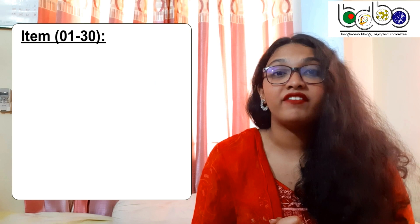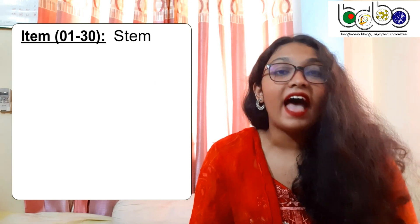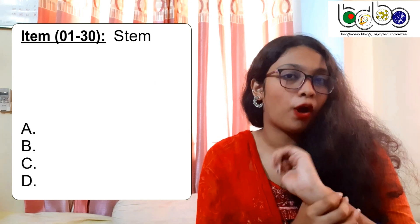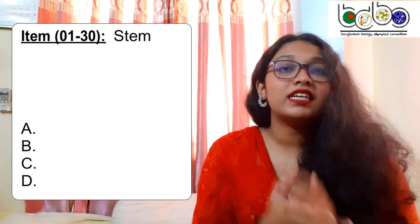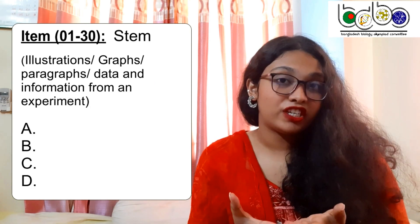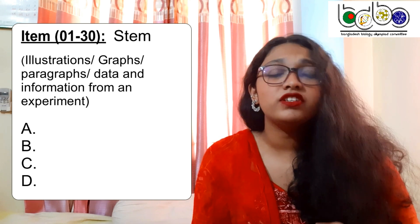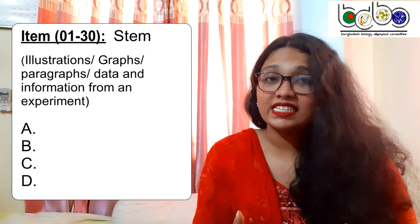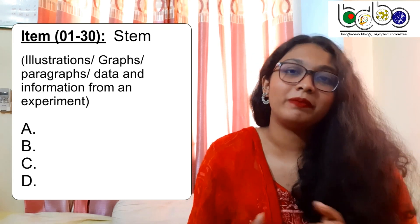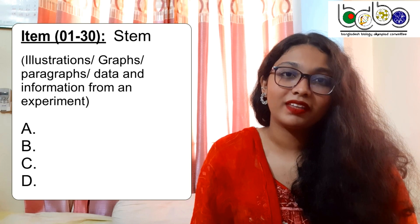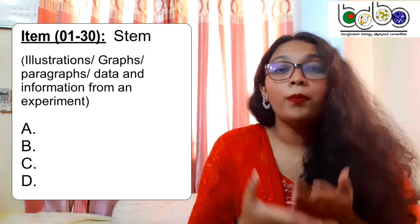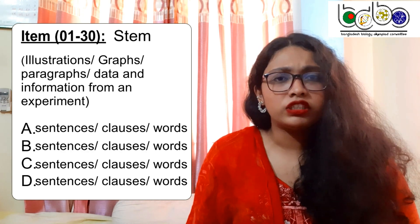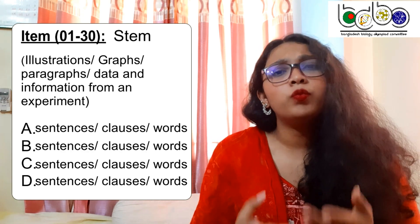The question paper of the Olympiad would contain 30 different items and each item will have a stem and four different options. The stems could contain illustrations, graphs, paragraphs or even data and information from an experiment. The options could be sentences, clauses or even words.